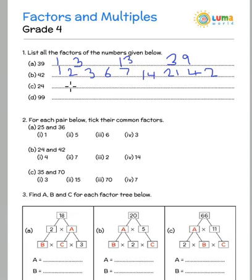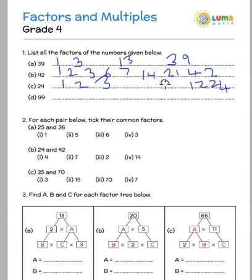For 24, we have 1 multiplied by 24, so 1 and 24 are factors. 2 and 12 are factors because 2 multiplied by 12 is 24. 3 multiplied by 8 is 24. 4 multiplied by 6 is 24. These are the factors of 24.